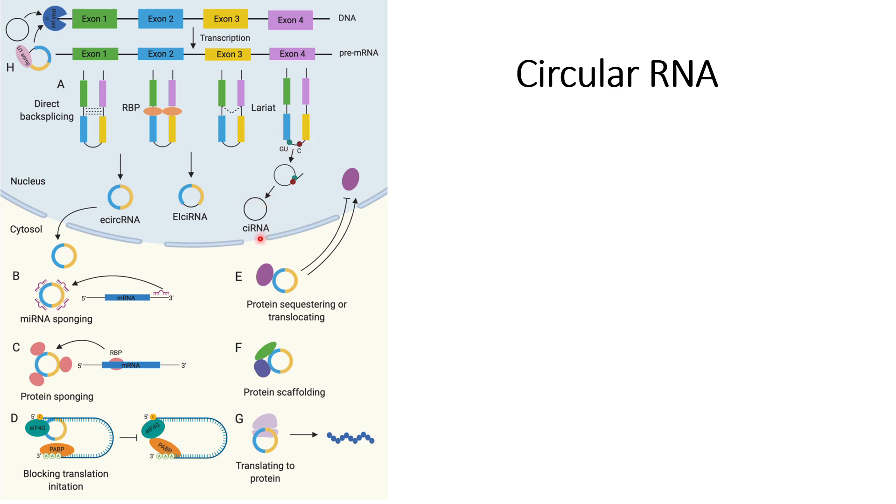Things that promote circular RNA formation include backsplicing. There are two natural ways by which backsplicing can occur: first with the help of RNA binding proteins or RBPs, and second through the lariat. The lariat usually occurs when there is skipping of any exon during translation.